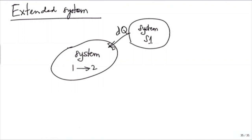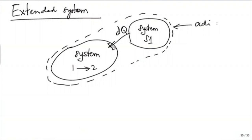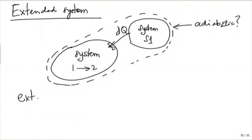Let us say system S1 and its surroundings which interact and provide this dQ. Remember that Q, like W, is an interaction, so always two systems must be involved. Then we say all we have to check is whether this extended system during the process is adiabatic or not. If it is adiabatic, we stop there. If it is not adiabatic, that means one of these is having an interaction with some third system. We include that in our extended system until we reach a stage where the extended system turns out to be adiabatic.